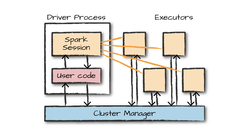Executors are the workhorses which are doing the actual work. The data gets distributed across executors, and the executors are the ones who are actually running all the operations written in the Spark application. There is a cluster manager, which is like an overall manager who allocates resources and helps the driver for execution. A driver process will have a Spark session — that's the entry point for any Spark application — which will run the user code.